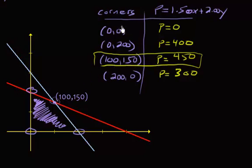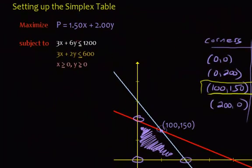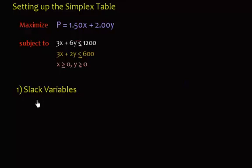So, that's good. I mean, we know how to do it using the graphing method. So, now, let's learn how to set up the simplex table. Step one, we're going to introduce what we call slack variables.